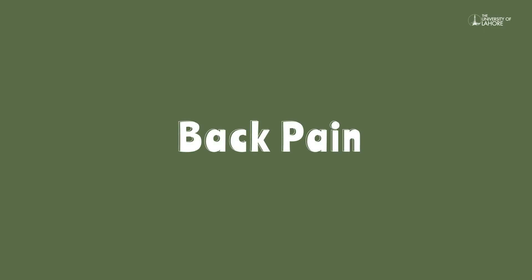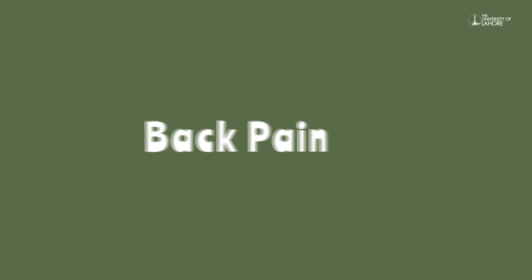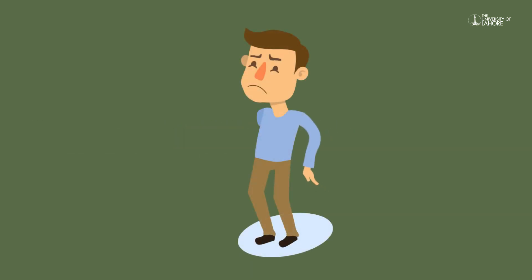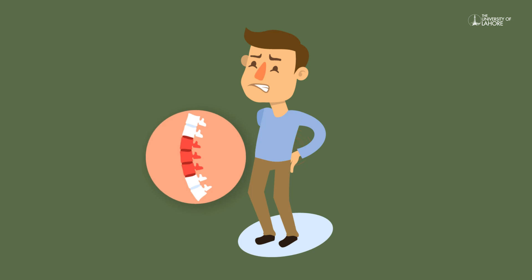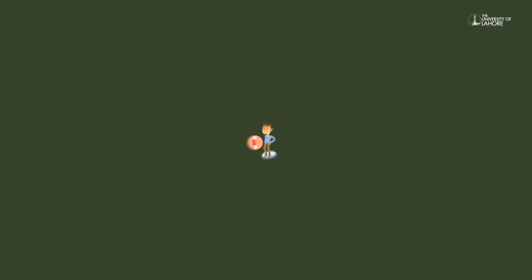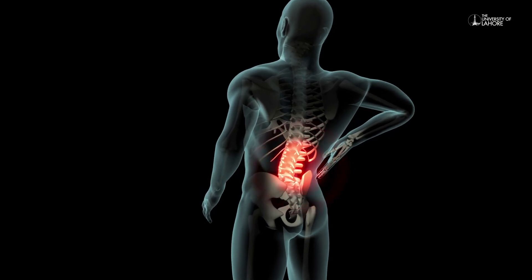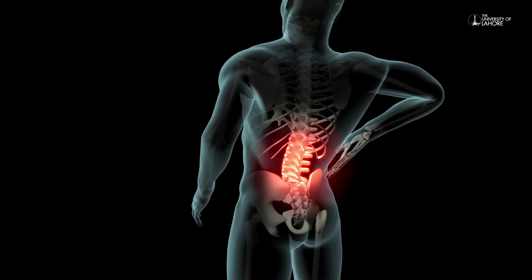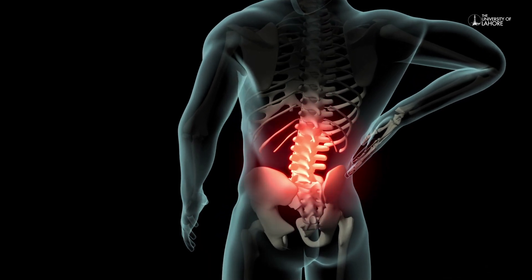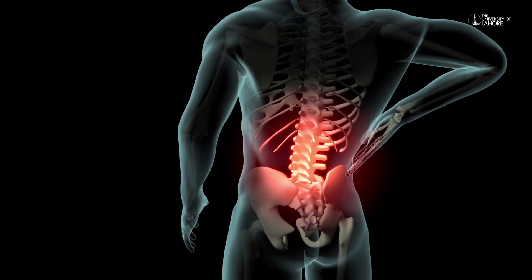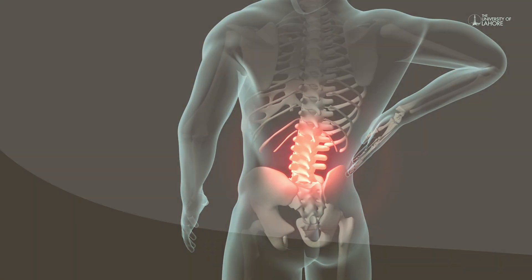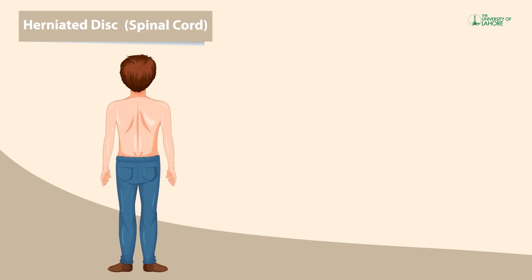What is back pain? Back pain is a very common problem in adults as well as youngsters. It is resulted due to strain of muscle, ligament, or tendon. In the majority of cases of disc herniation, the L4-L5 and L5-S1 disc levels are involved. The back pain travels through the spinal cord and affects the neck region as well.